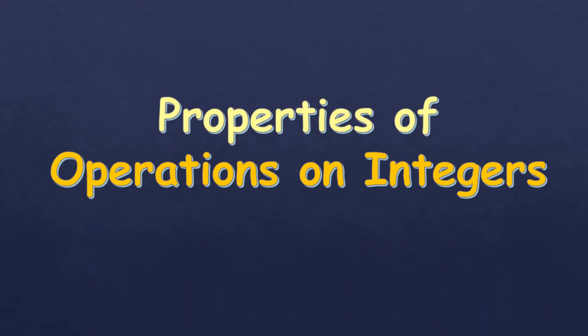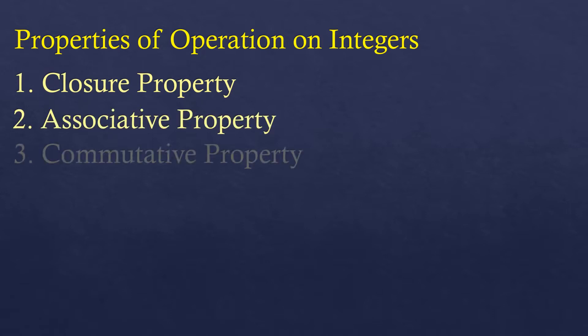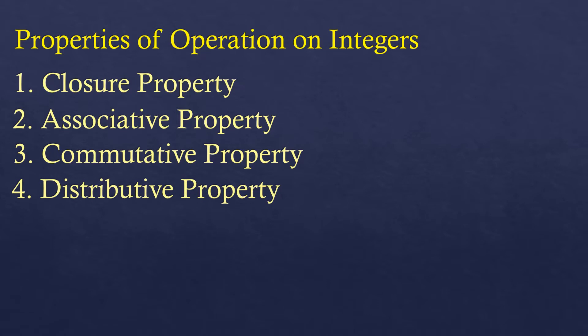In this video, I'm going to talk about properties of operations on integers. There are five properties of operations on integers. These are closure property, associative property, commutative property, distributive property, and identity property.